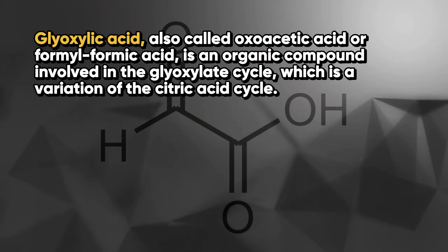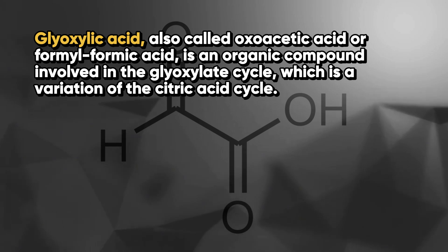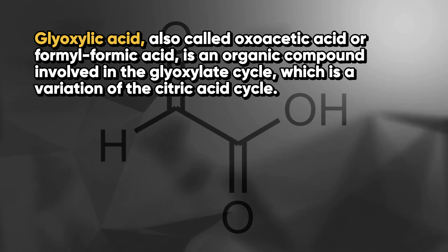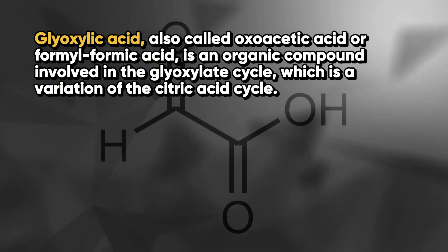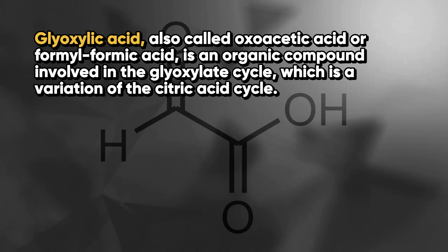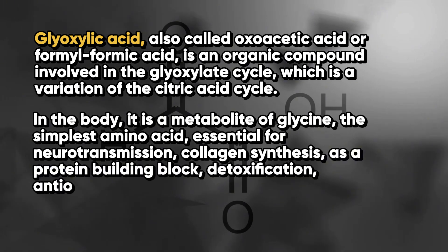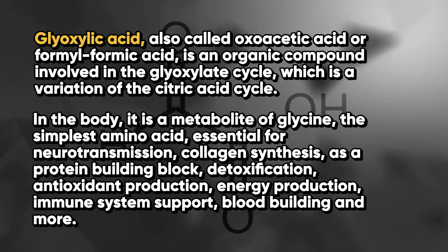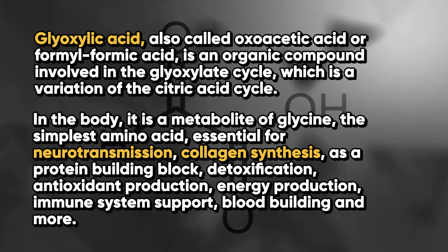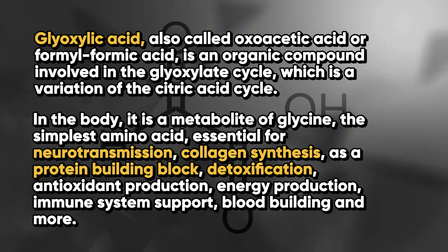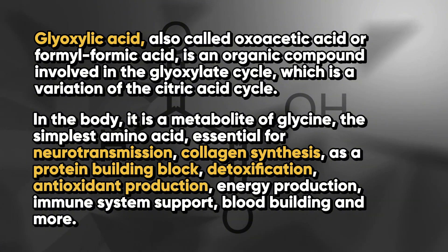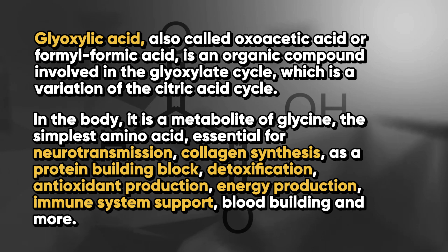Glyoxylic acid, also called oxoacetic acid or formiformic acid, is an organic compound involved in the glyoxylate cycle, which is a variation of the citric acid cycle. In the body, it is a metabolite of glycine — the simplest amino acid, essential for neurotransmission, collagen synthesis, as a building block for protein, important for detoxification, antioxidant production, energy production, immune system support, blood building, and so much more.